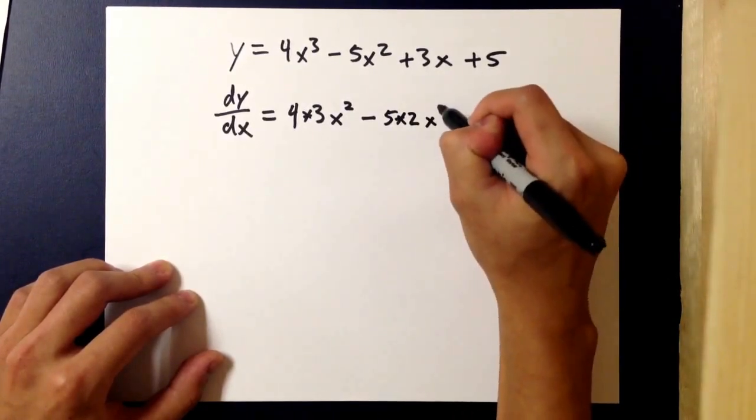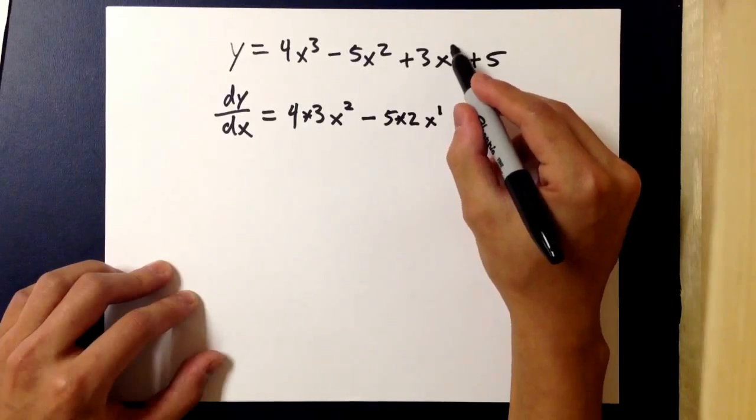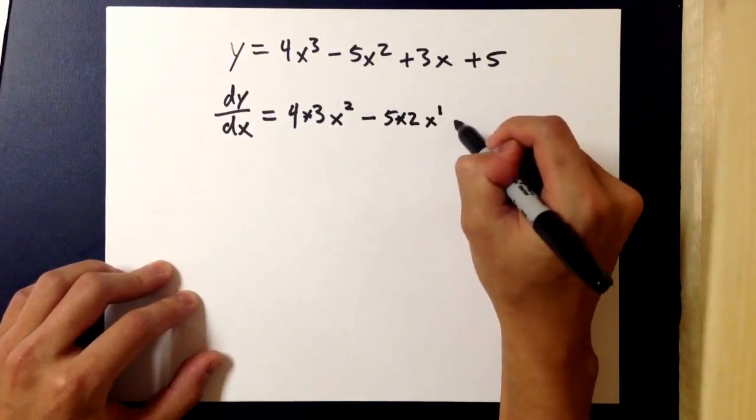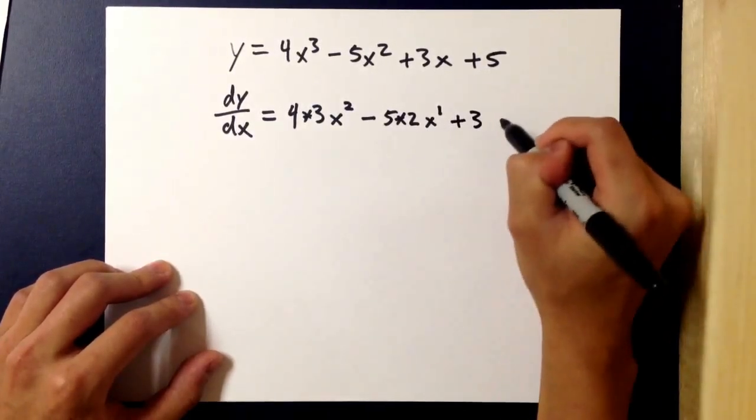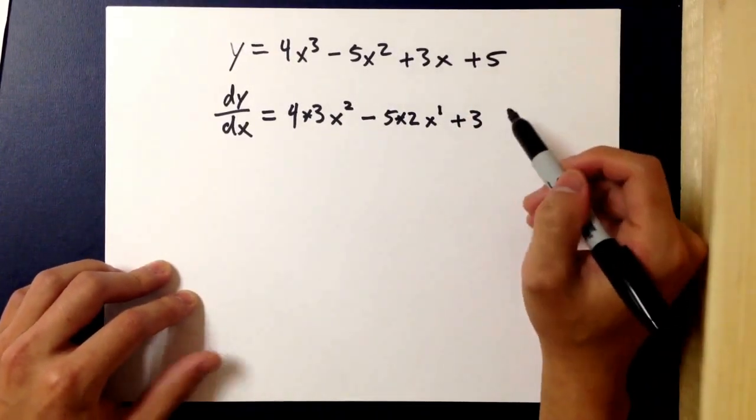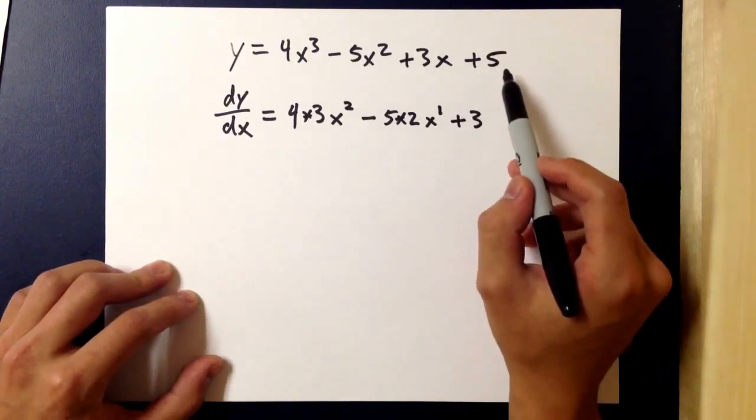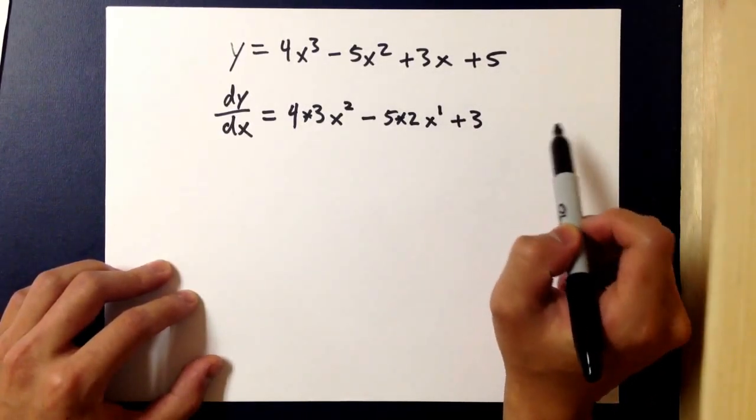x to the 2 minus 1, which is 1, and then plus 3. The exponent is 1, so it would just be 3 times 1, still 3, and x to the first minus 1 would be x to the 0 which would be 1, so there is no more x and the constant disappears as we take the derivative.